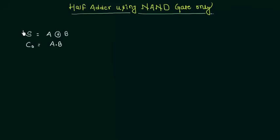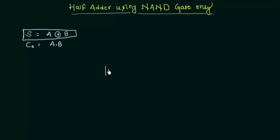Let's move to the sum first. You already know how to implement the XOR gate using the NAND gate — we discussed this in our universal gate presentation. This circuit uses the minimum possible number of NAND gates to implement the XOR operation. Just remember this pattern; it's very easy to build a XOR gate this way.